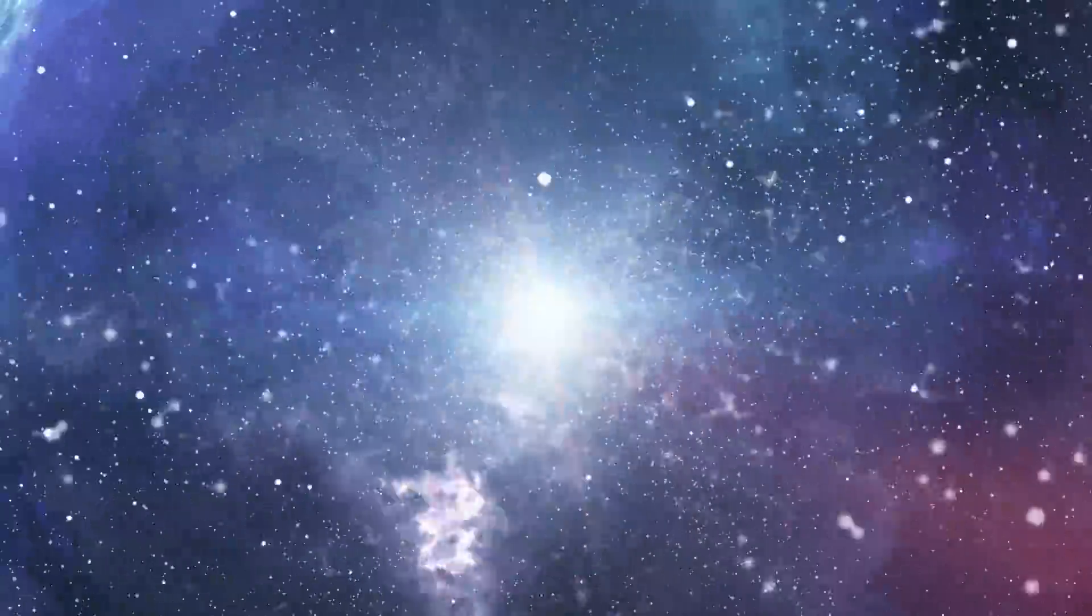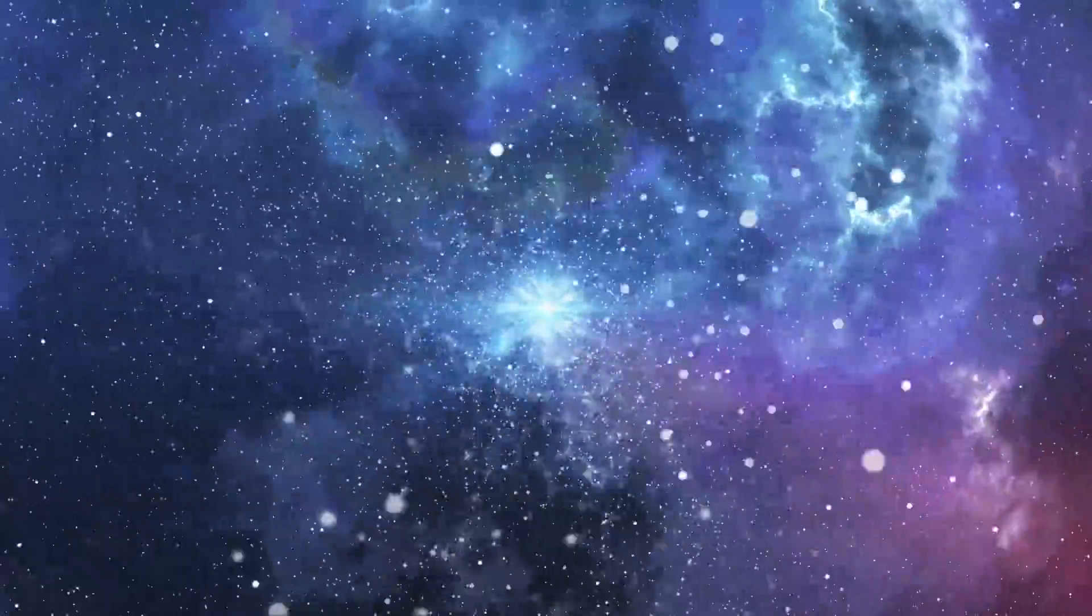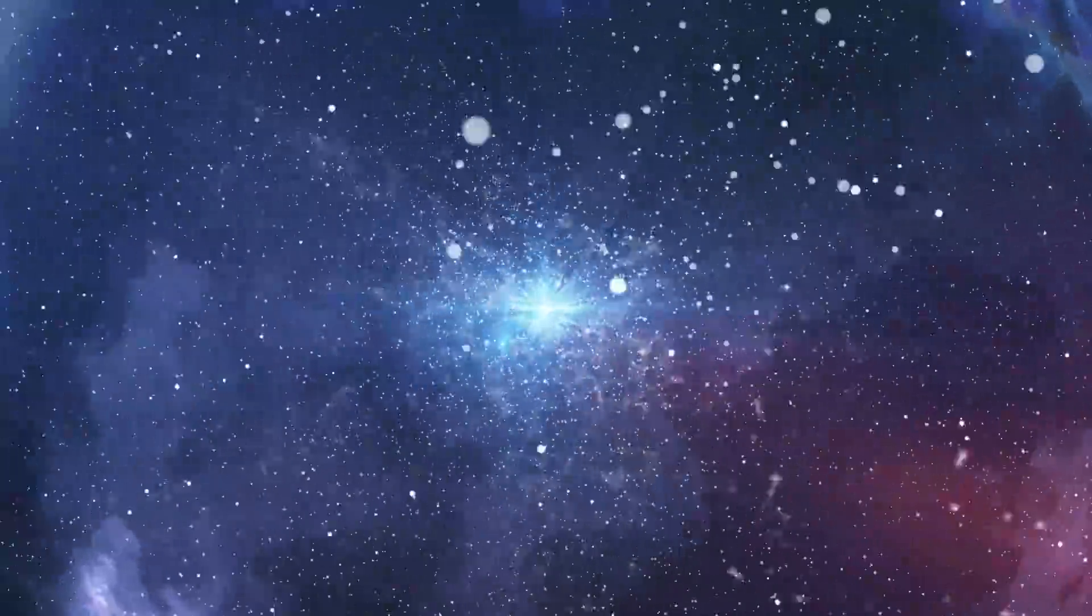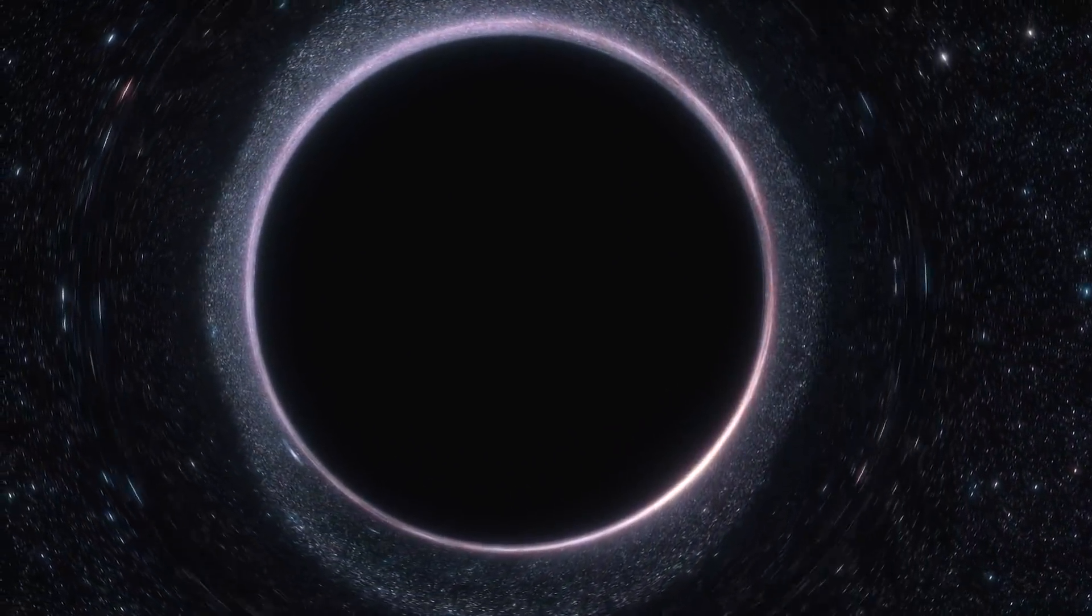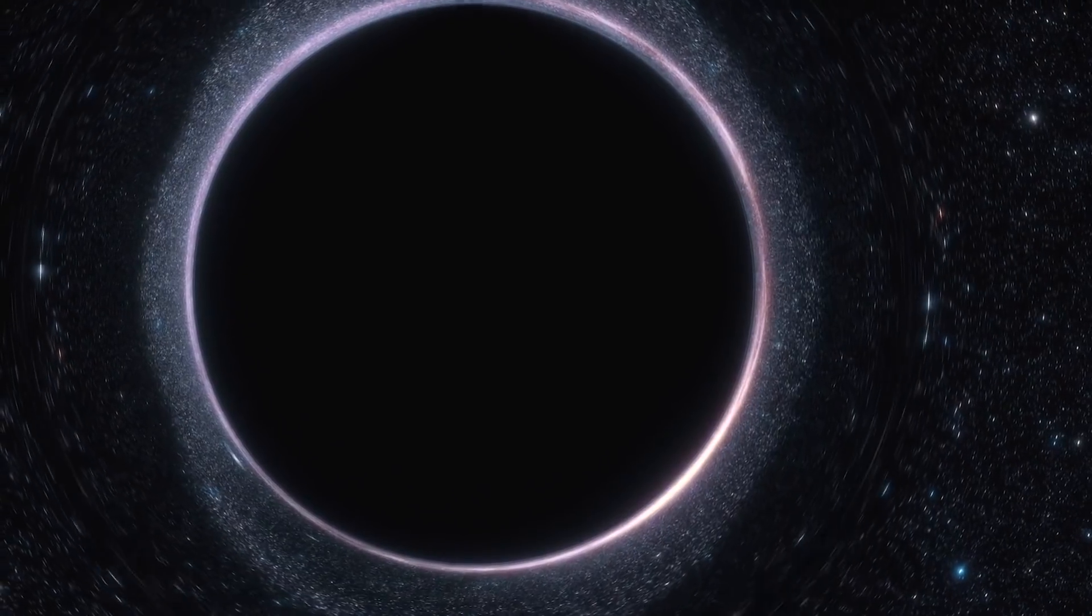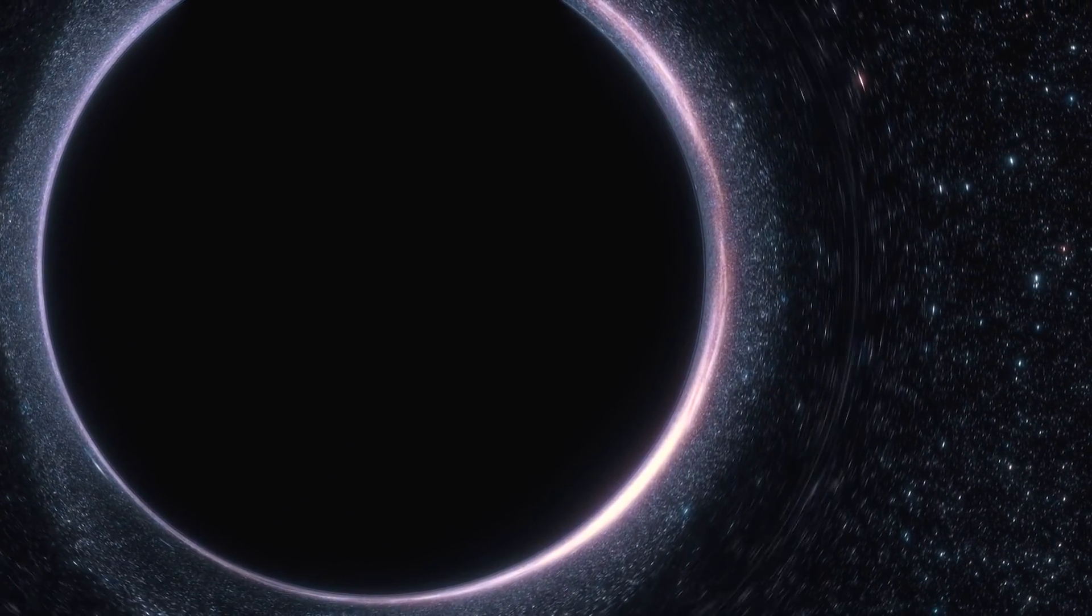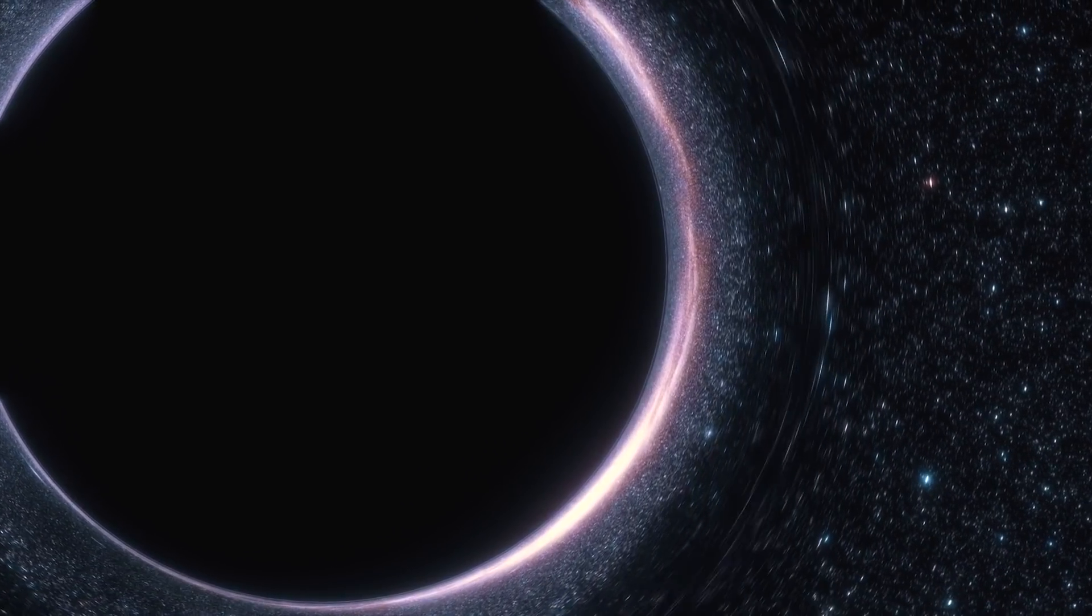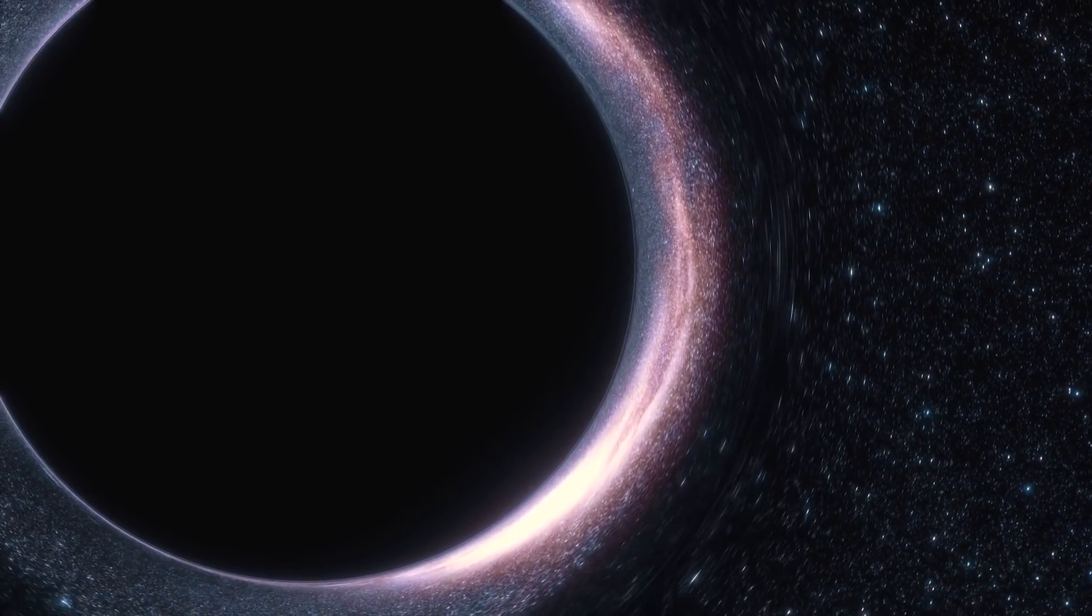Until this discovery was made, black holes were thought to have fallen into two different categories: stellar mass black holes and supermassive black holes. Stellar mass black holes are known to form from collapsing stars and typically don't get much larger than a few dozen times the mass of the Sun. Stellar mass black holes are the black holes that LIGO and Virgo have previously detected merging.